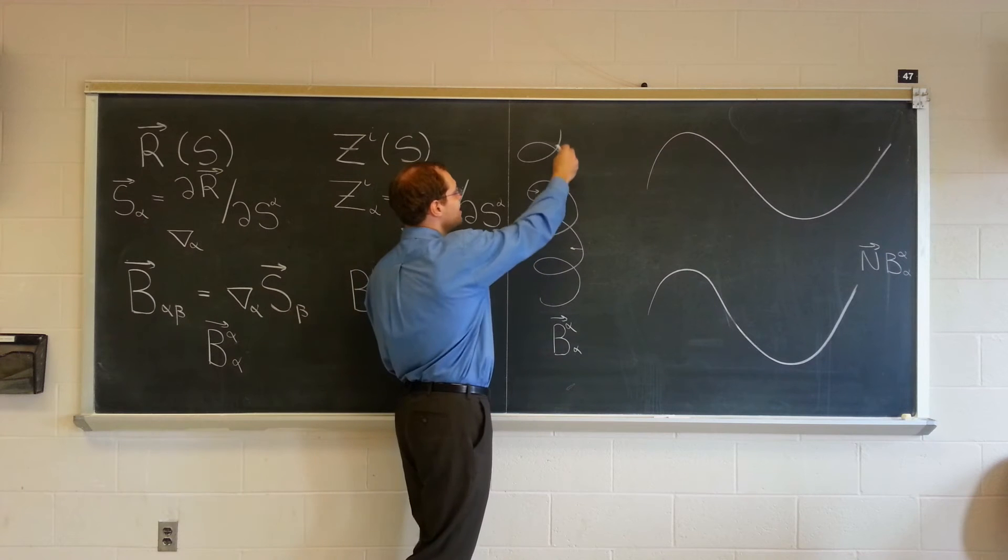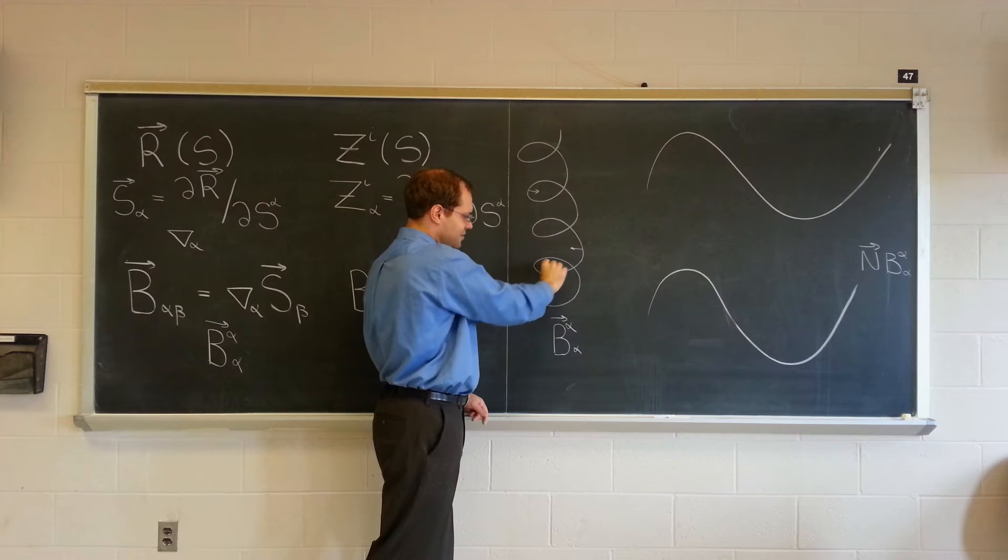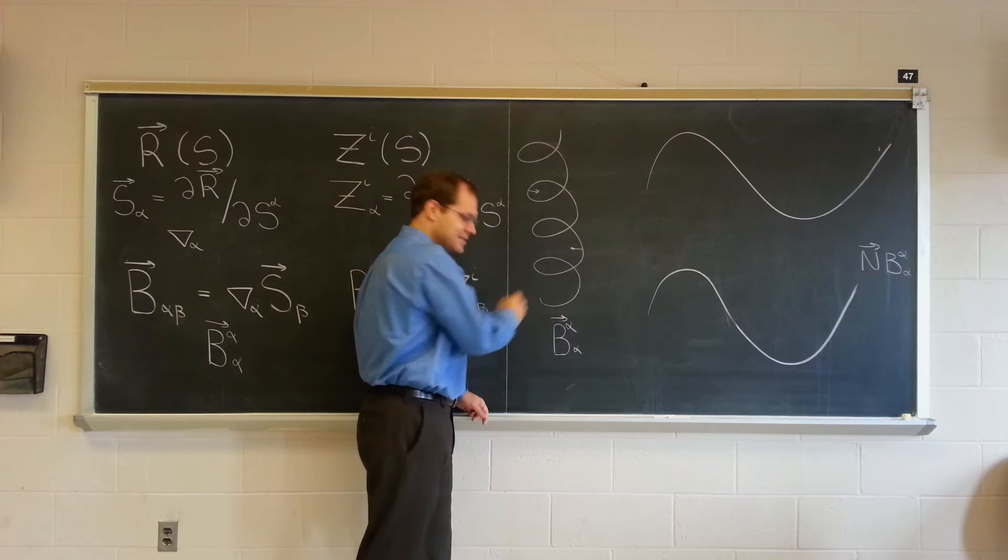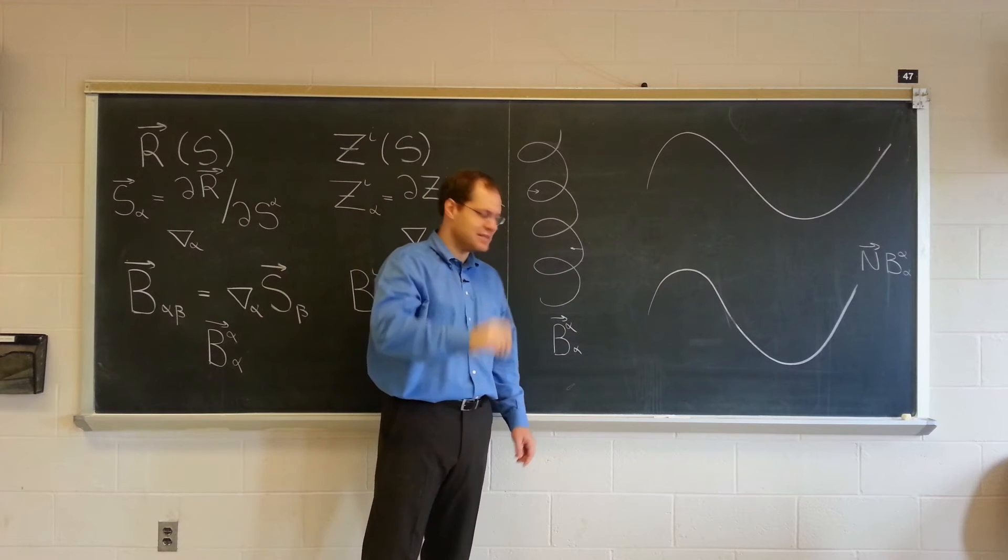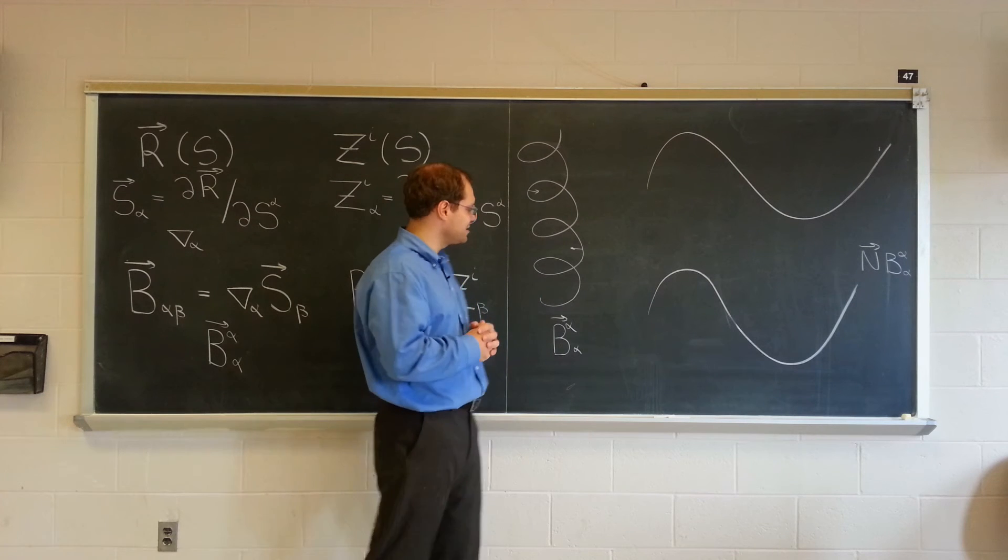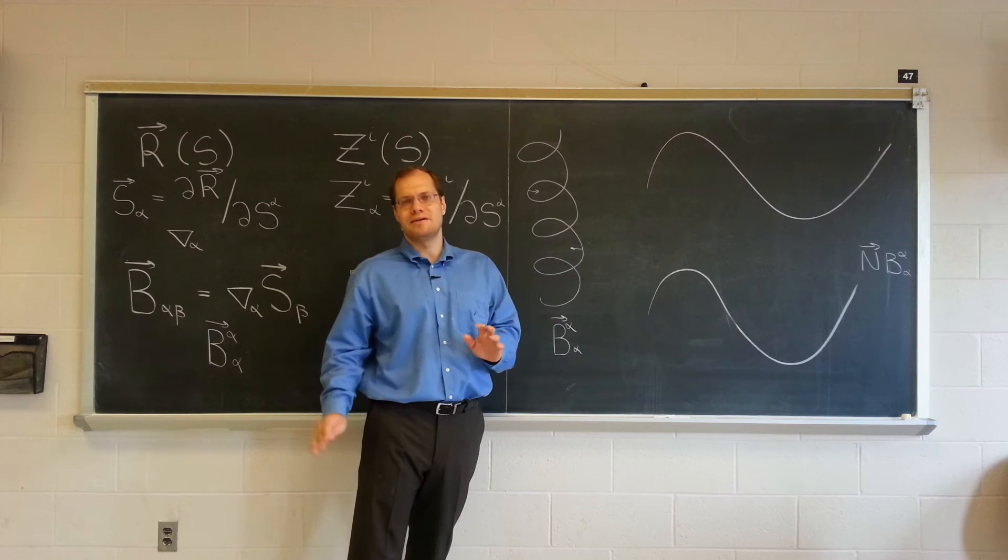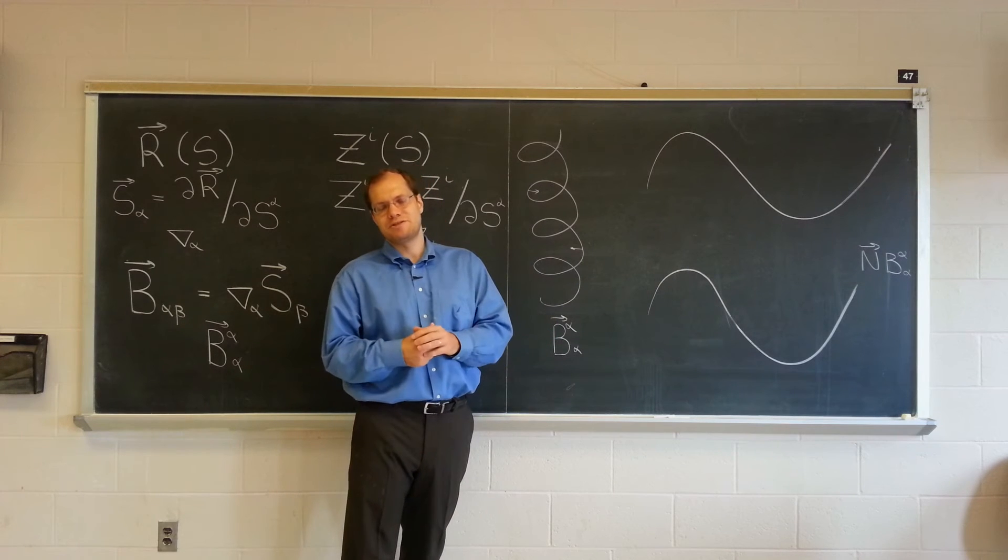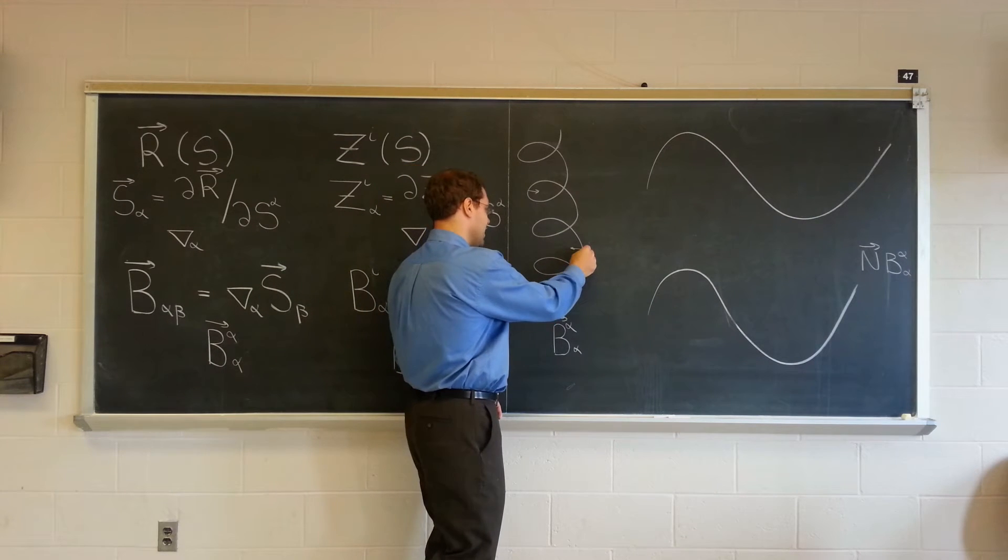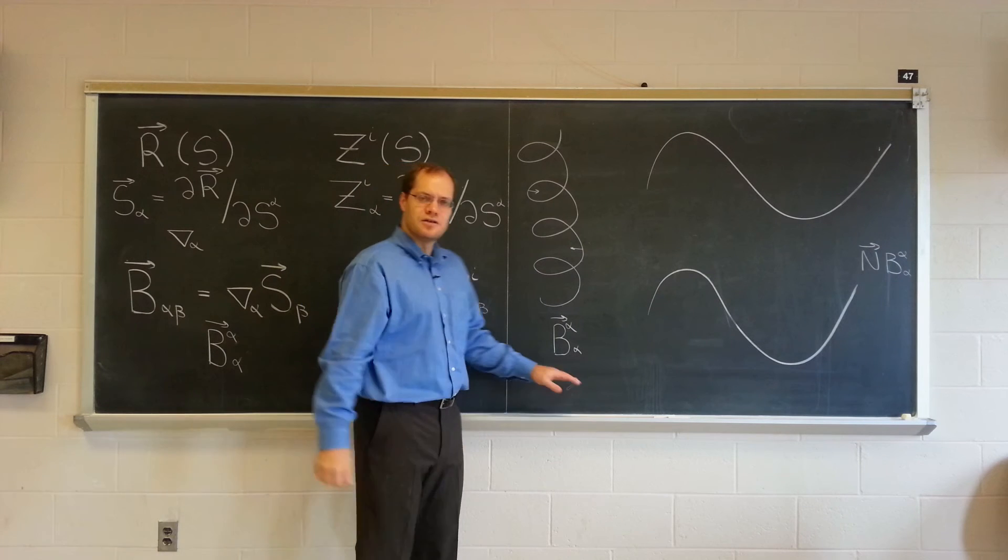Nice thing to realize, is if we parametrize the curve in the opposite direction, of course S_alpha would change, right? It would now be going down and pointing down, slightly down at a constant inclination. But of course, the second derivative won't change at all. Because it's the second derivative, the two minuses will cancel each other. And it'll be this vector. So it's completely invariant, and doesn't depend on parametrization. As long as the parametrization is proper, and doesn't stop, and then pick up again, and weird things like that. Okay, so that's the spiral.